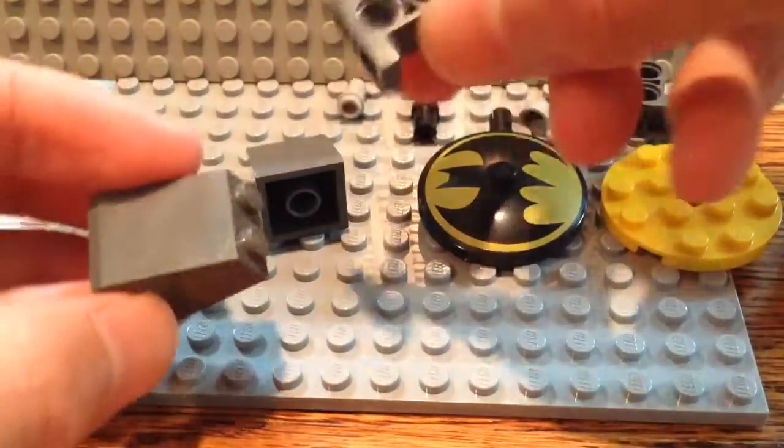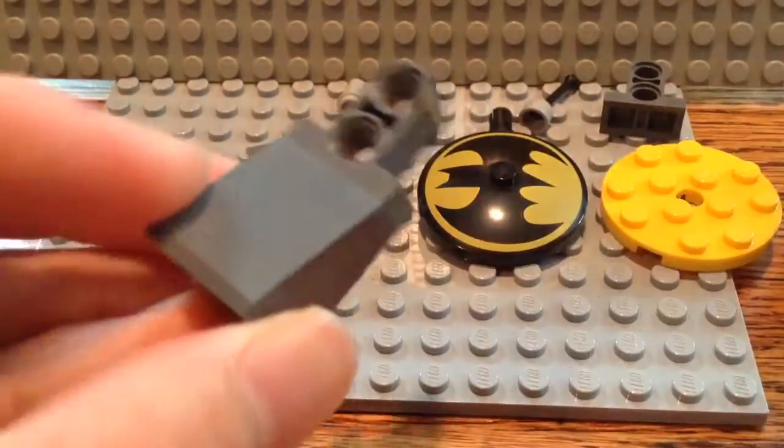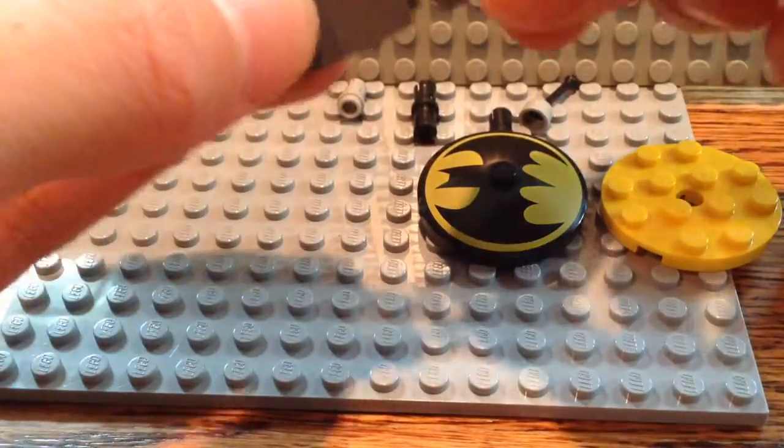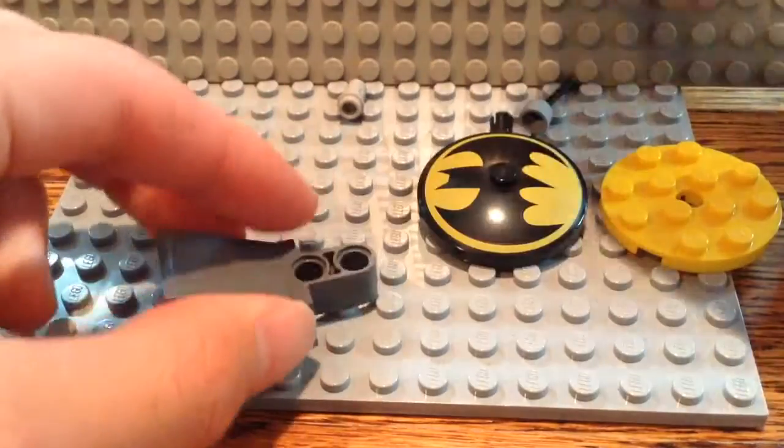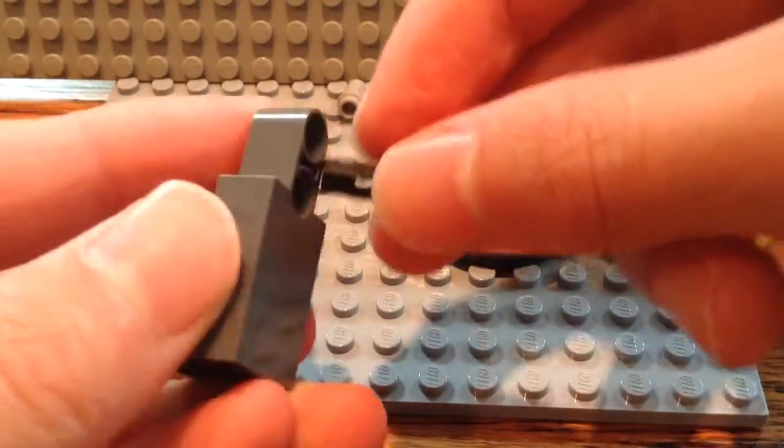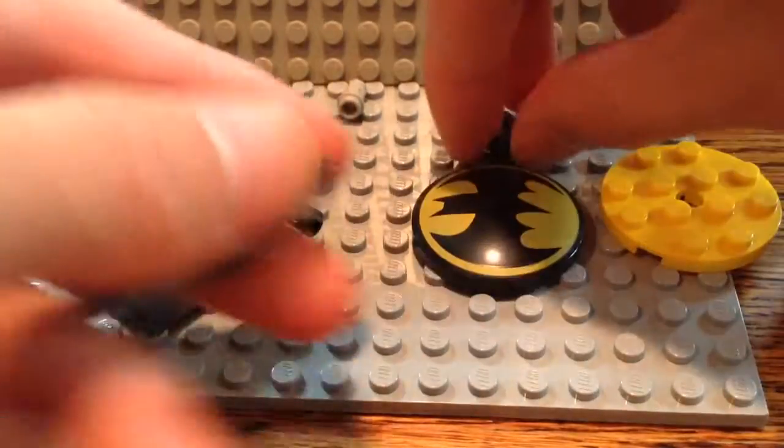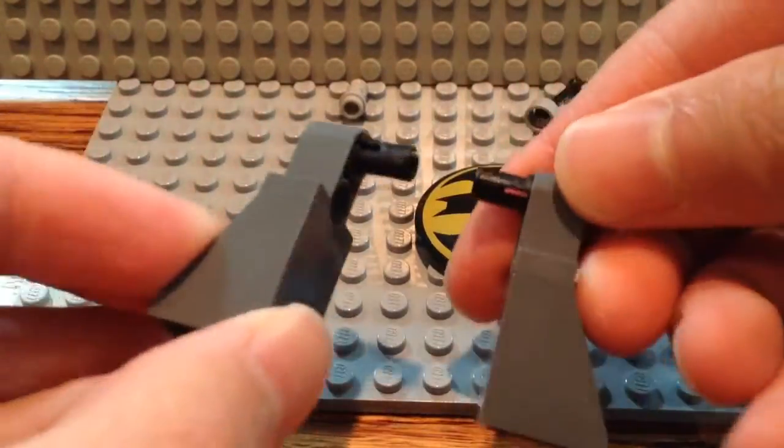And then you want to get one of these pieces. These are both dark gray. And you want to make two of these. So, you just stick them together. And then here's the second one. And then, I'm going to want to insert this black piece here. I believe on the top. Kind of looks like a R2D2 if you ask me.